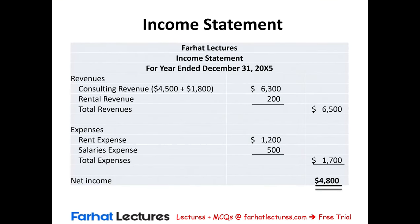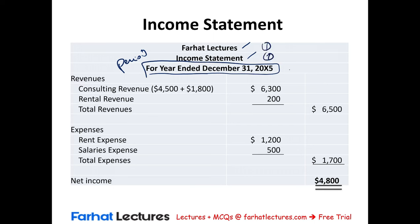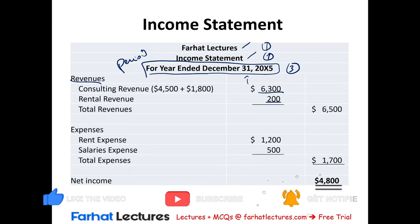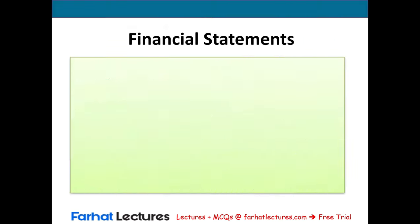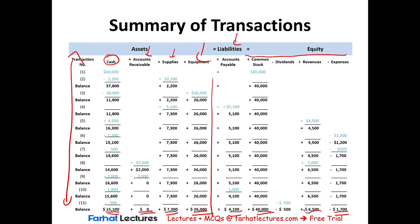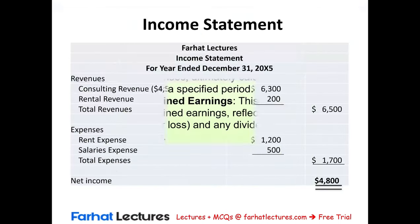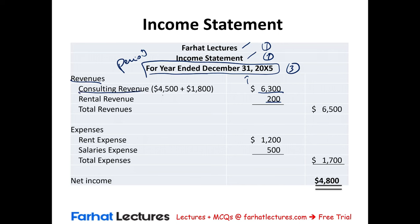Let's take a look at the first financial statement: the income statement. It will have three headings — the name of the company, the name of the statement, and for year ended, which is a period of time, December 31st, 20X5. Then we list our revenues. From the summary of transactions, we have total revenues of 6,500: 6,300 was consulting revenue and 200 was rental revenue. If we have more than one revenue, we indent a little and list them separately.